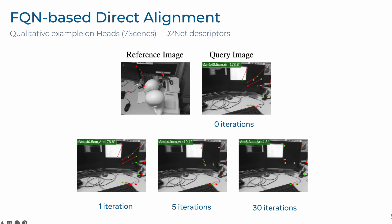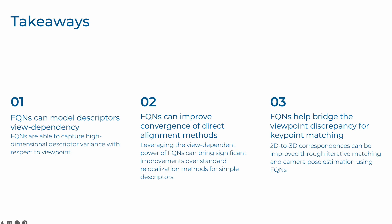To wrap up this presentation, we provide the following conclusions. We showed that Feature Query Networks are able to model the variance of high-dimensional descriptors with respect to viewpoint. Our experiments demonstrated that this is an efficient way of improving subsequent camera pose estimation algorithms, either on direct alignment methods or PNP-based approaches. While FQNs are still scene-specific by design, we believe they could in the future be extended to become scene-agnostic. Thank you for watching.